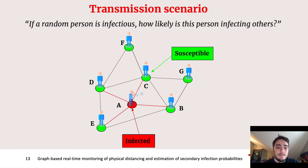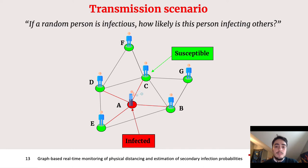A crucial point in our analysis is that we expect to see transmission only to the first neighbors of the infected pedestrian. For example, pedestrian A will have a probability of infection only to B, C, D, or E — the first neighbors — and the probability to have an infection from A to G or from A to F will be zero.